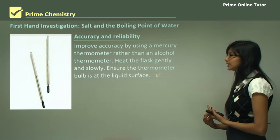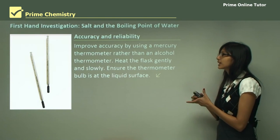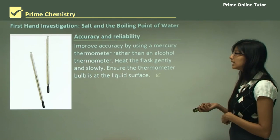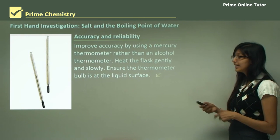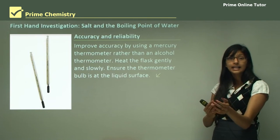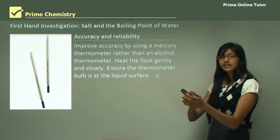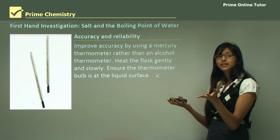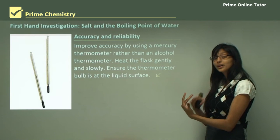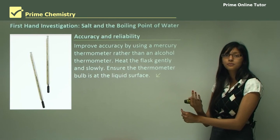To improve accuracy, you can use a mercury thermometer rather than an alcohol thermometer, because mercury is generally more accurate in measuring temperatures. Also heat the flask gently and slowly, and make sure the Bunsen burner is placed in the middle of the apparatus rather than one side. If you put it on one side, only that part gets heated, making the temperature non-uniform. Always ensure the whole mixture gets uniformly heated.